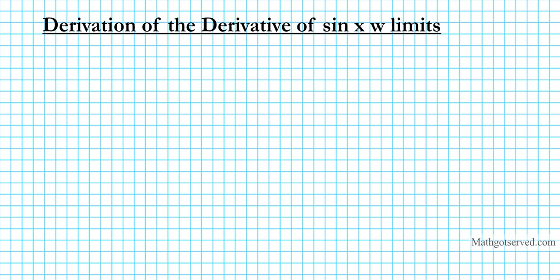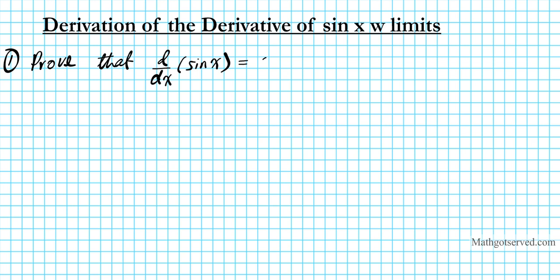We're going to be going over an example on how to derive the derivative of the sine function. For this example, we are going to prove that the derivative of sine x — or basically d/dx of sine x — equals cosine x, using the definition of a derivative.